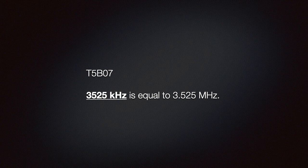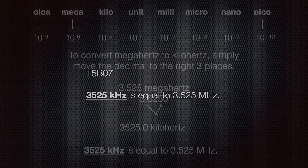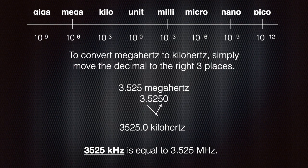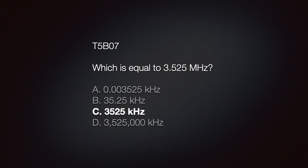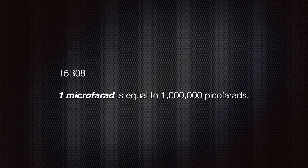The correct answer is D, 3 amperes. We should know that 3525 kilohertz is equal to 3.525 megahertz. To convert megahertz to kilohertz, simply move the decimal to the right three places. The exam question looks like this: which is equal to 3.525 megahertz? A) 0.003525 kilohertz, B) 35.25 kilohertz, C) 3525 kilohertz, or D) 3,525,000 kilohertz. The correct answer is C, 3525 kilohertz.